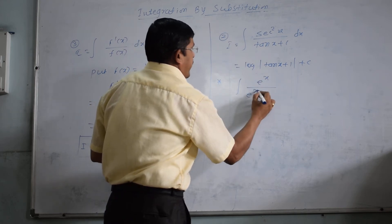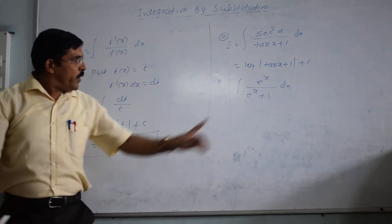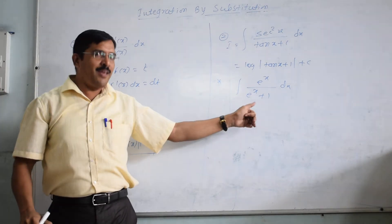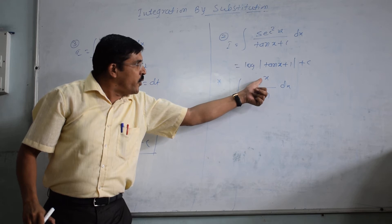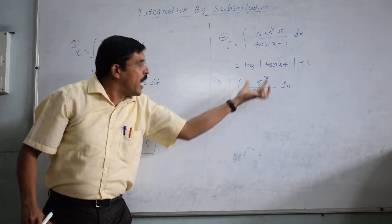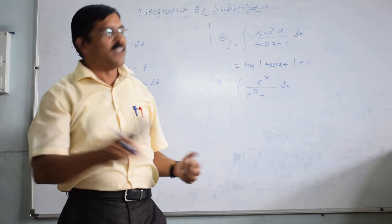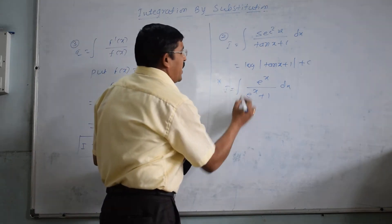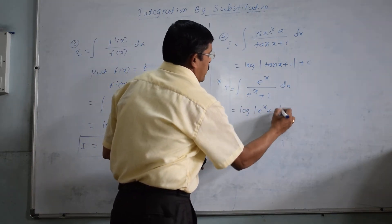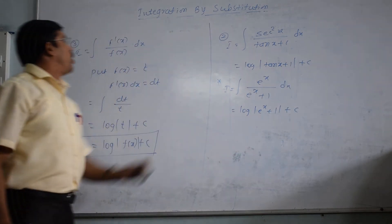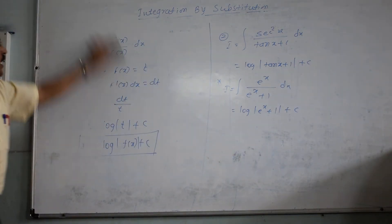Similarly, consider integral of eˣ / (eˣ + 1) dx. What is the derivative of eˣ + 1? It is eˣ. So the derivative of the numerator equals the denominator's derivative — derivative at numerator and function at denominator. So the answer can be directly written as log|eˣ + 1| + c.